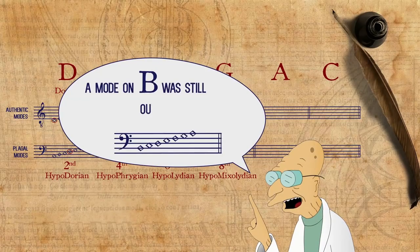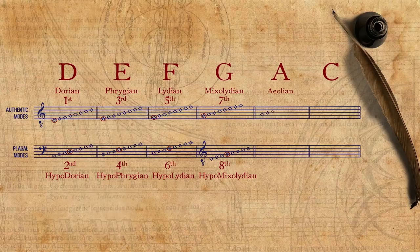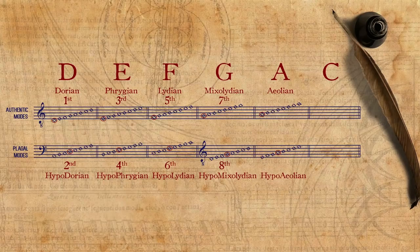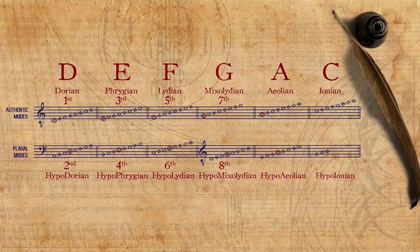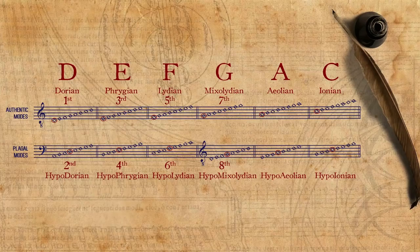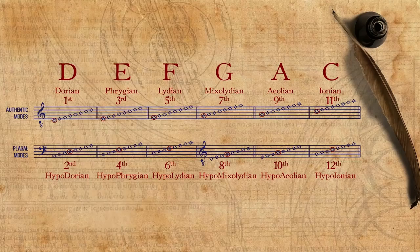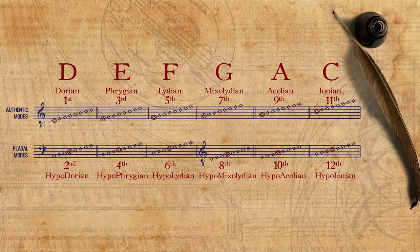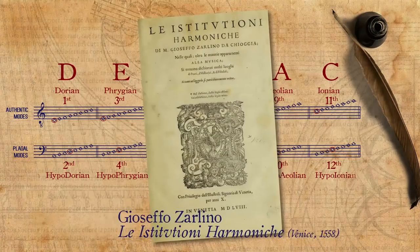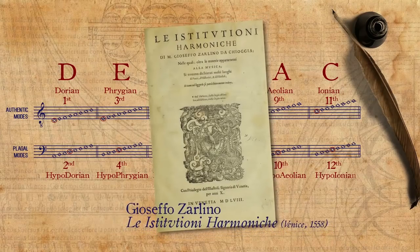A mode on B was still out of the question, since its fifth degree is a diminished interval. So, based on the finalis A, we have the Aeolian mode with its authentic and plagal versions, and based on the finalis C, we have the Ionian mode, also with its authentic and plagal versions. With these four new modes, we have a total of twelve modes. This set of twelve modes was accepted by many, most famously by Zarlino, who presented it in his influential 1558 book Istituzioni Harmoniche.